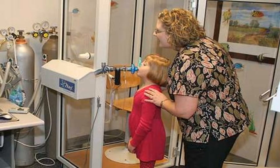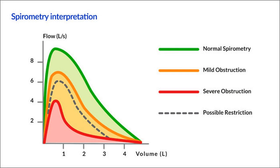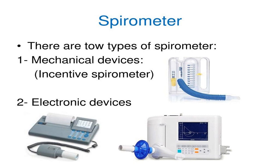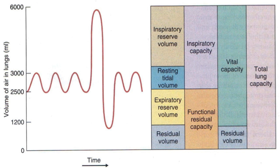Spirometry is also helpful as part of a system of health surveillance in which breathing patterns are measured over time. Spirometry generates pneumotachographs, which are charts that plot the volume and flow of air coming in and out of the lungs from one inhalation and one exhalation. The spirometry test is performed using a device called a spirometer. Most spirometers record and display a graph called a spirogram — a volume-time curve showing volume in liters on the y-axis and time in seconds on the x-axis — as well as a flow-volume loop depicting the rate of airflow on the y-axis and total volume of inspired or expired air on the x-axis.